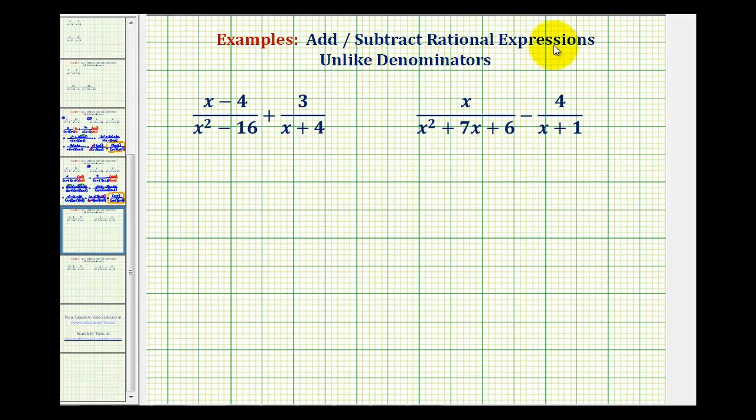To add or subtract rational expressions, we must have the same or like denominators. As soon as we recognize that we don't have like denominators, the first step is going to be to factor the denominators.